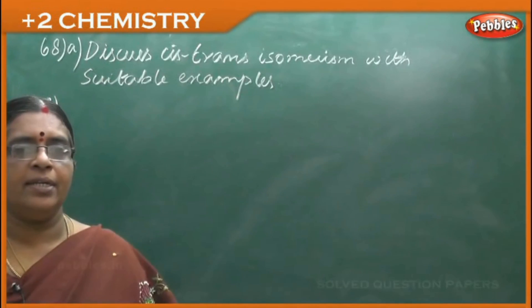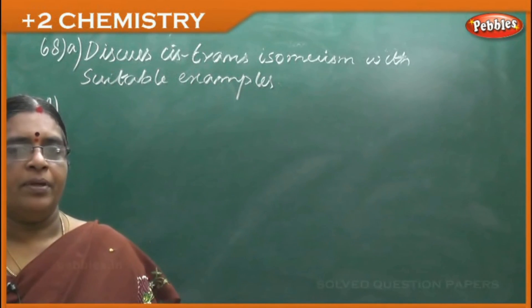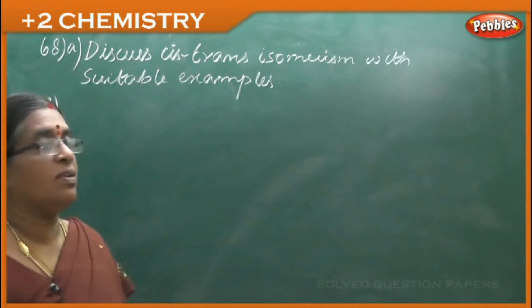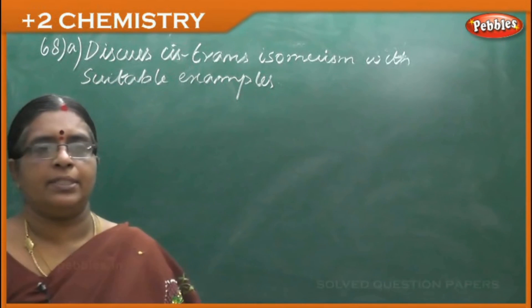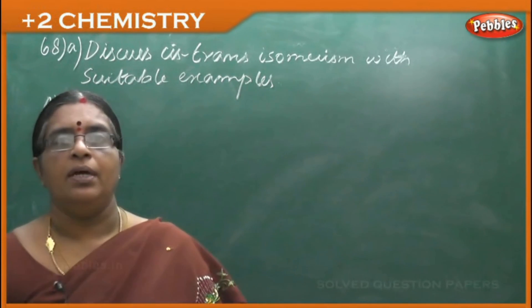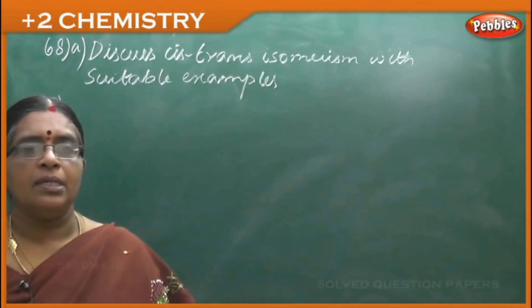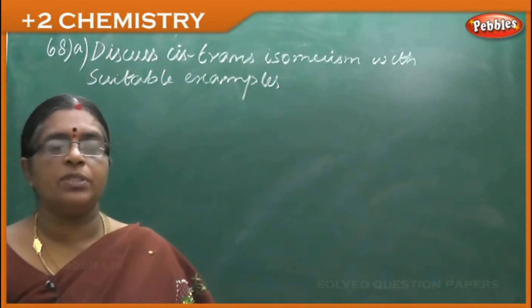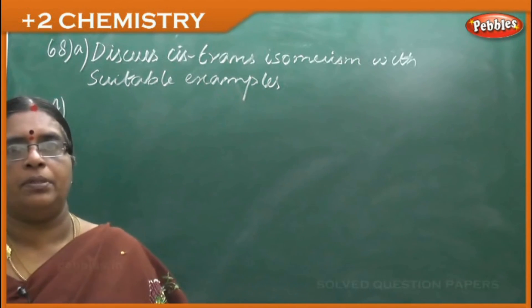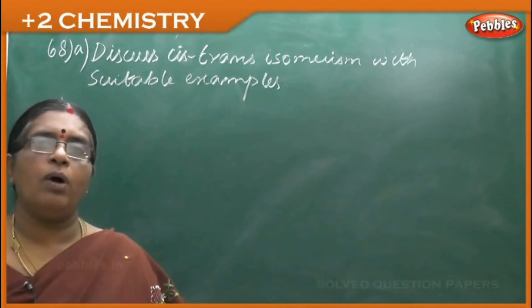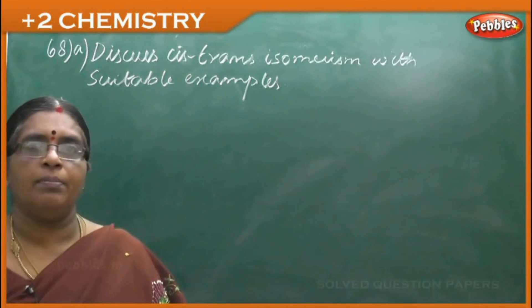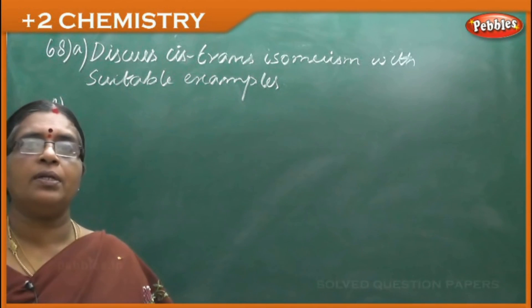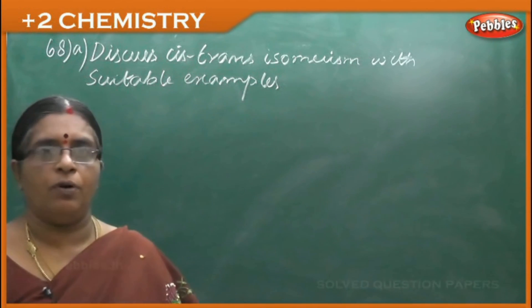Next is question 68A: discuss cis-trans isomerism with suitable examples. Now, what is isomerism? A compound having the same molecular formula but different structural formula.